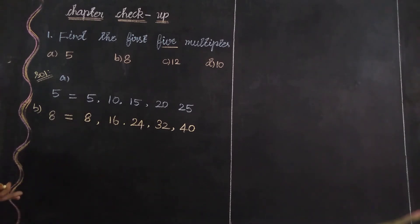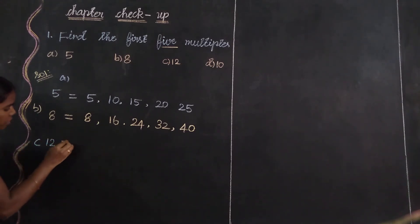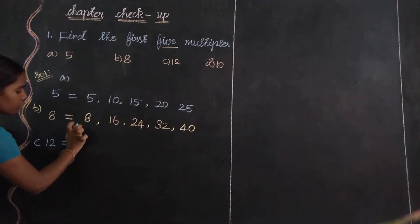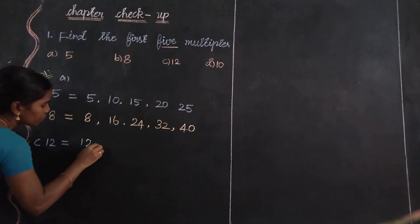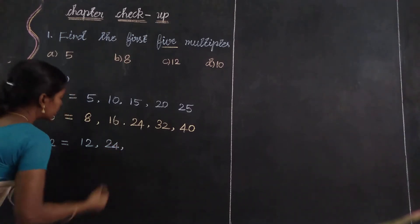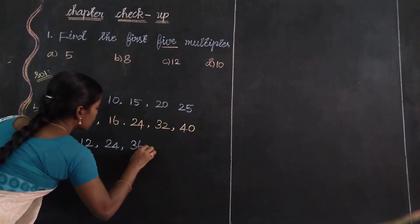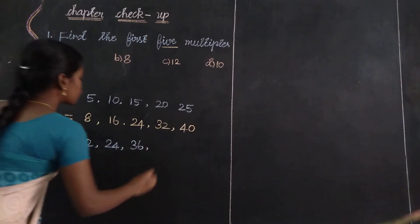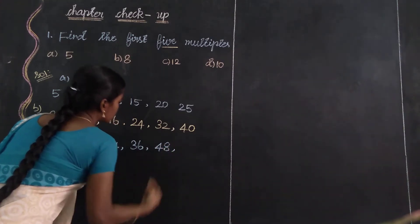Then the third one, C, is 12. It is a 2-digit number. The value is C12. That number is 12. 1 times 12 is 12, 2 times 12 is 24, then 3 times 12 is 36, 4 times 12 is 48.